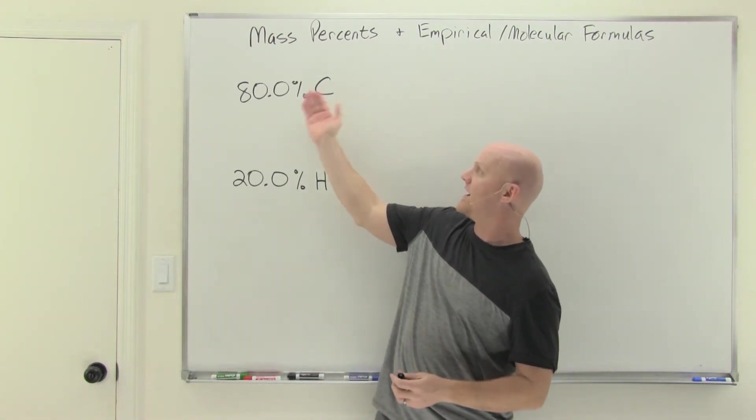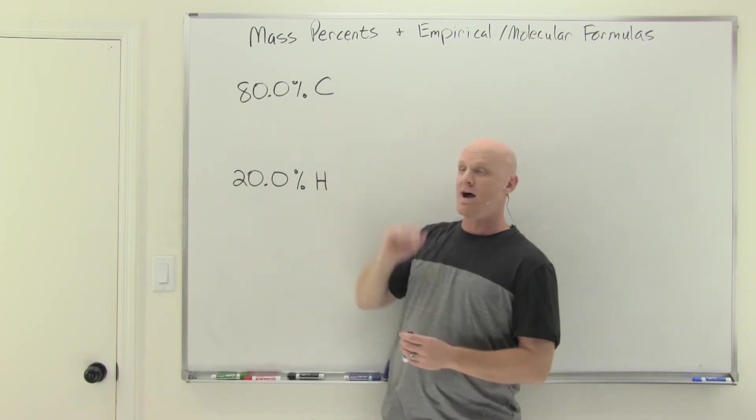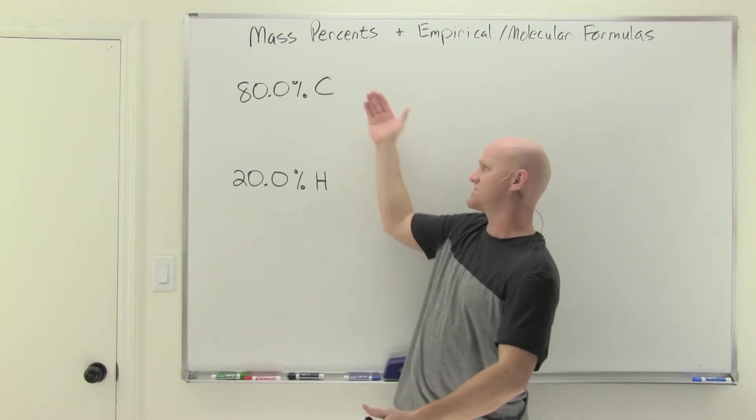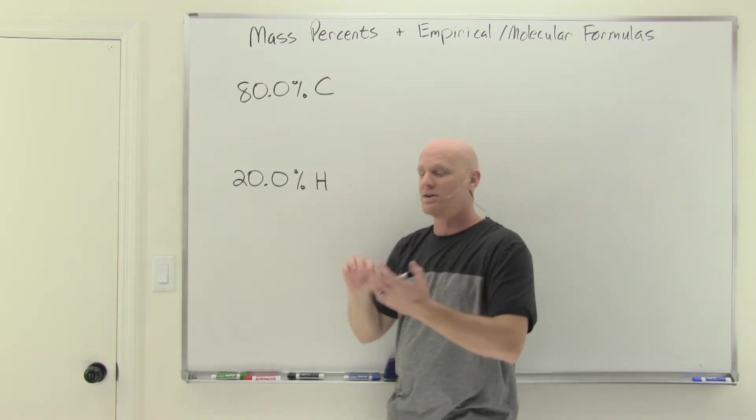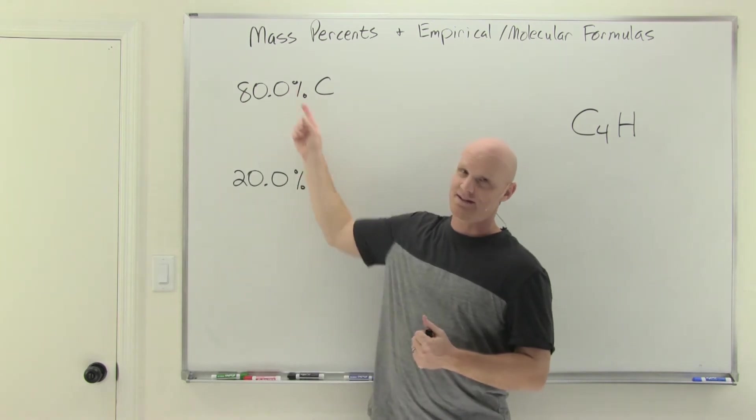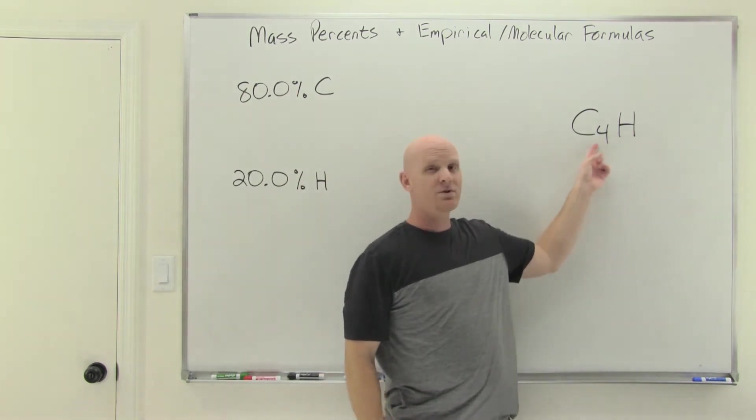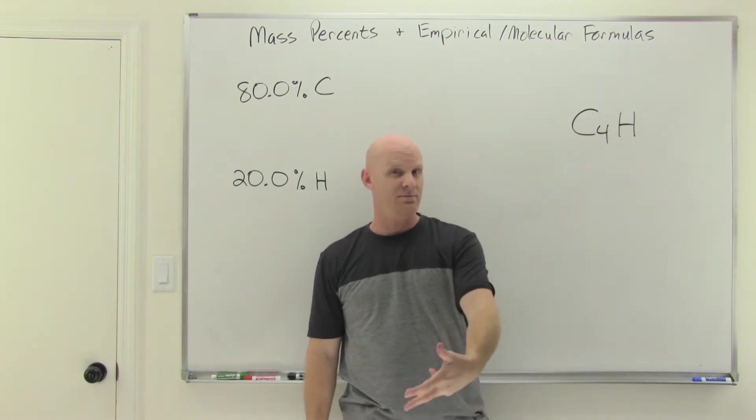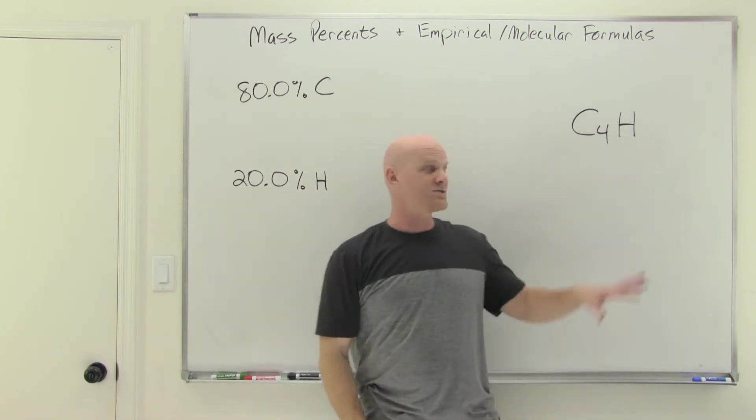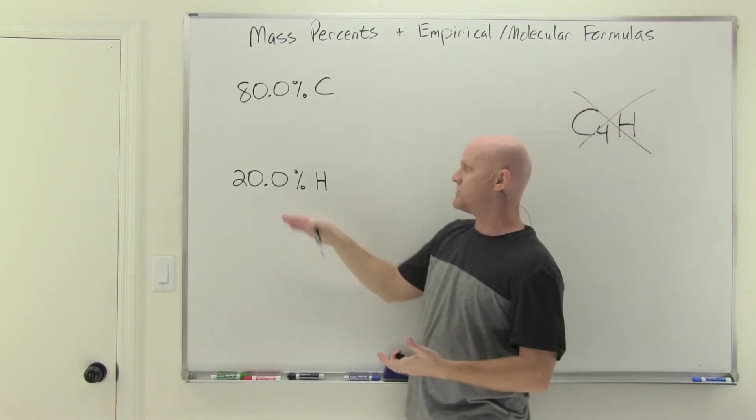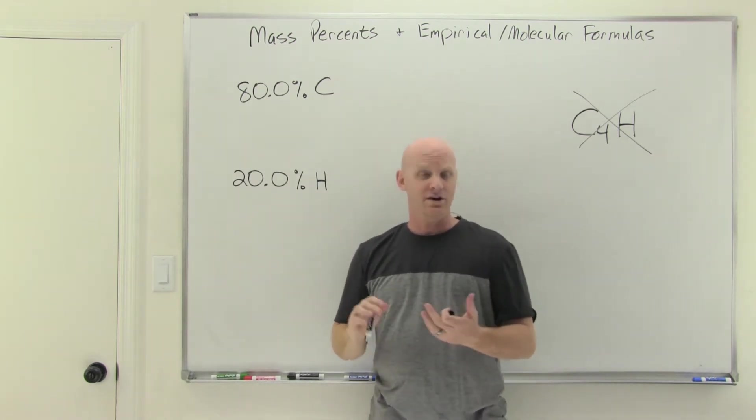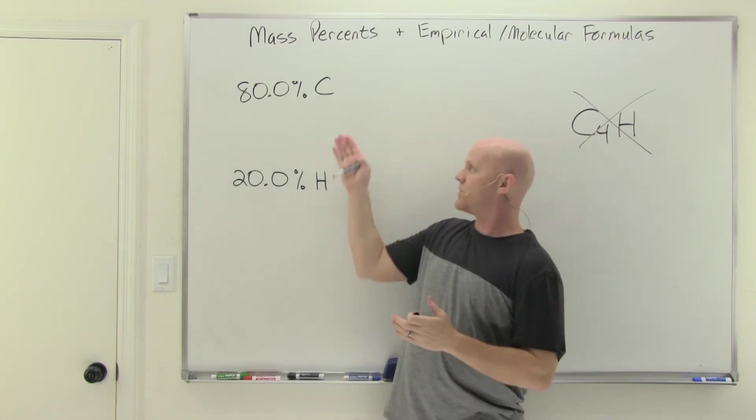We'll start with mass percent. We've got a compound that is 80.0% carbon by mass and 20.0% hydrogen by mass. The question is, what is the empirical formula? A lot of students see this and they're like, oh, sweet, Chad, you gave me an easy one. I can do this one in my head. I don't even need my calculator. And they're like, yep, that's C4H. The problem is that these are the mass percents. They're the percent by mass of carbon and hydrogen, which is not what the numbers here represent. This four to one ratio is a ratio of either atoms or moles. I like to think of it as a mole to mole ratio, not a gram to gram ratio, which is what this represents.